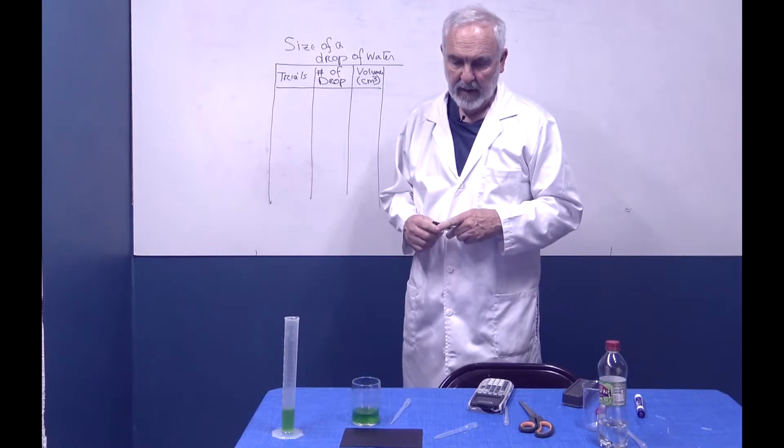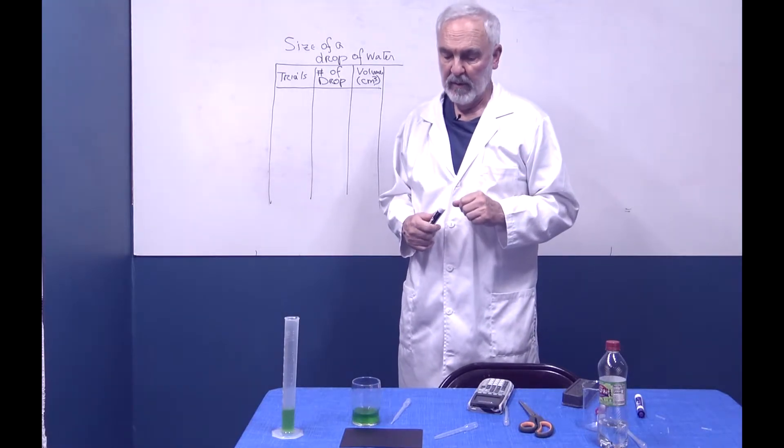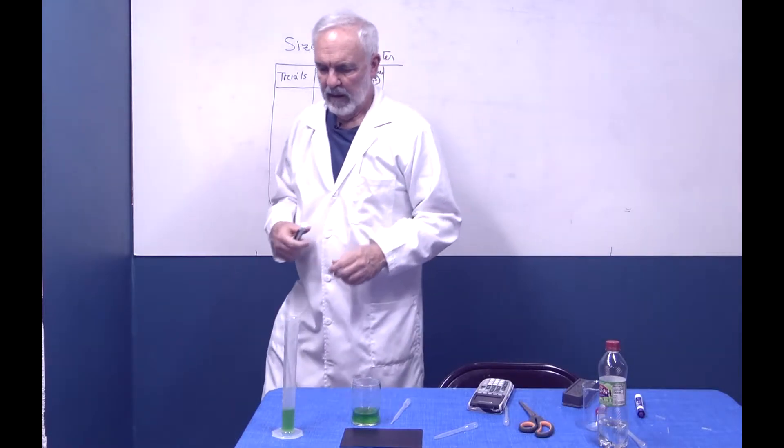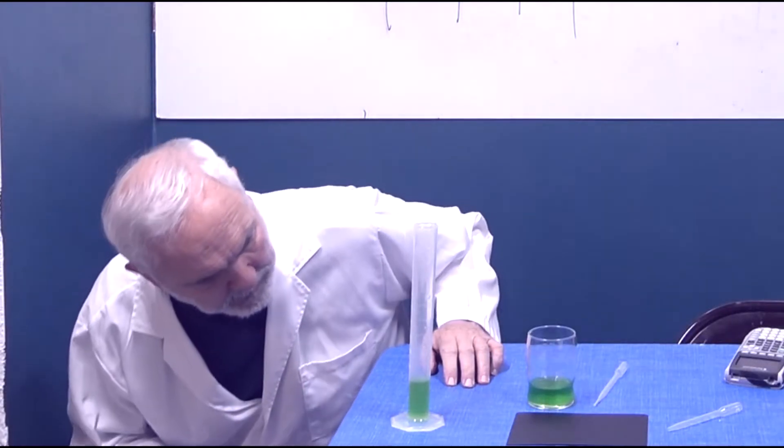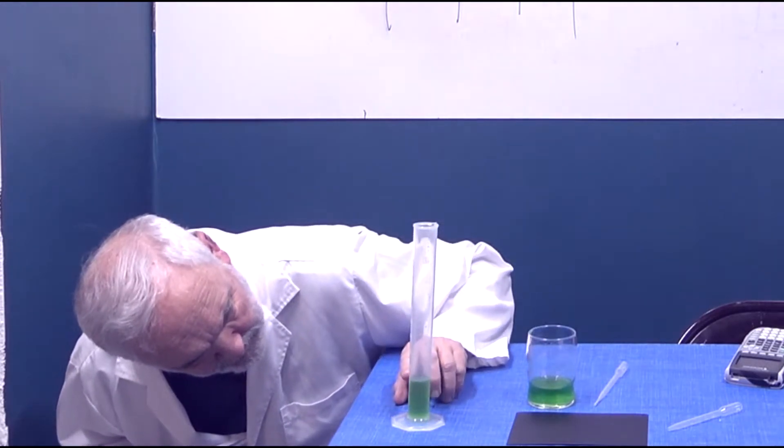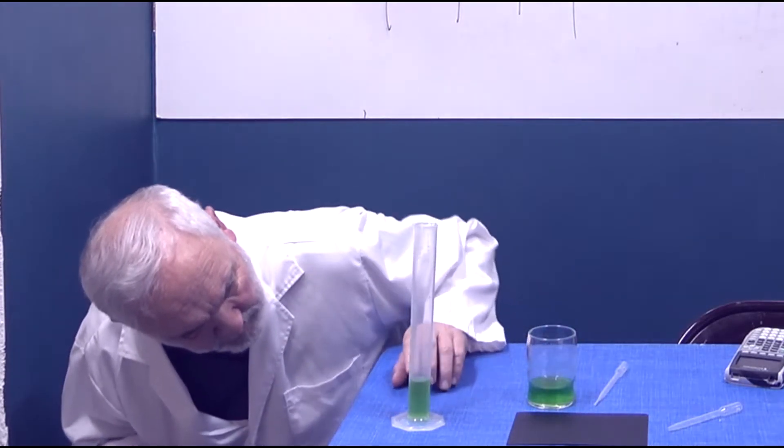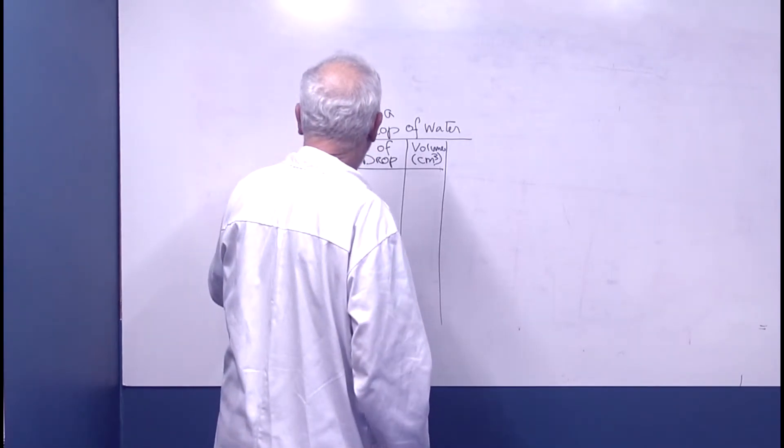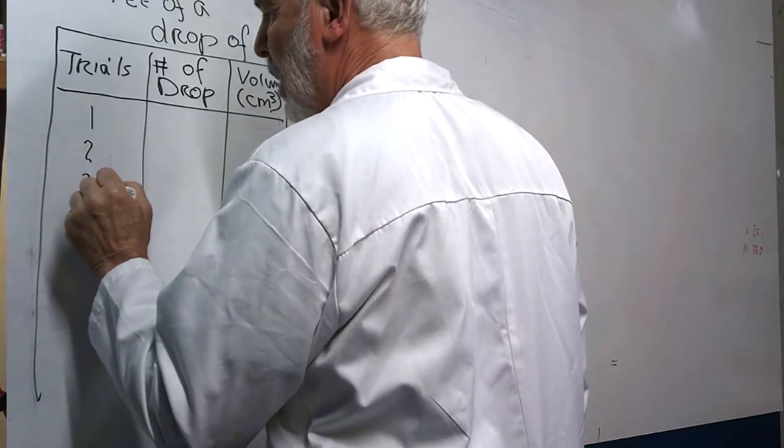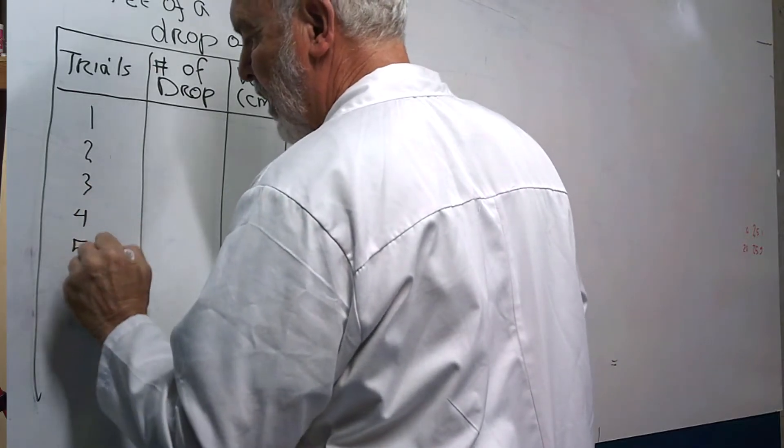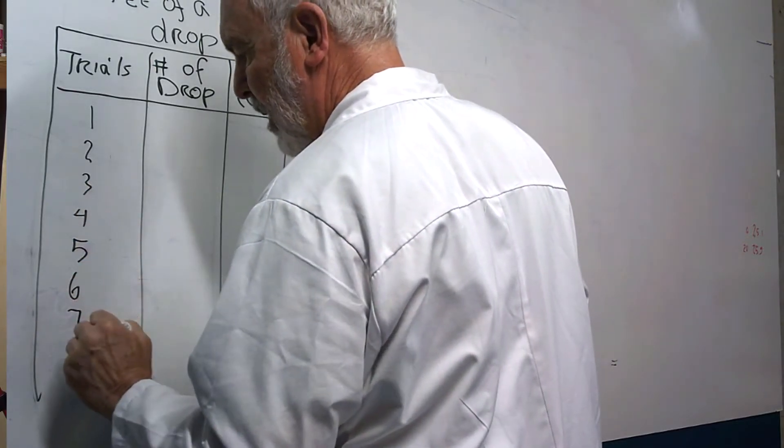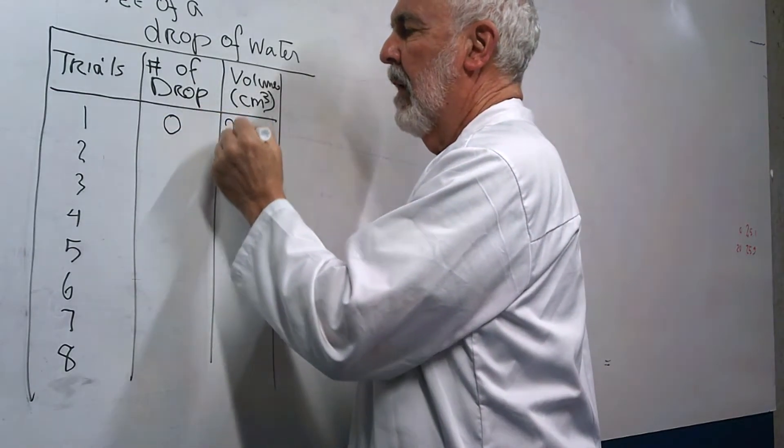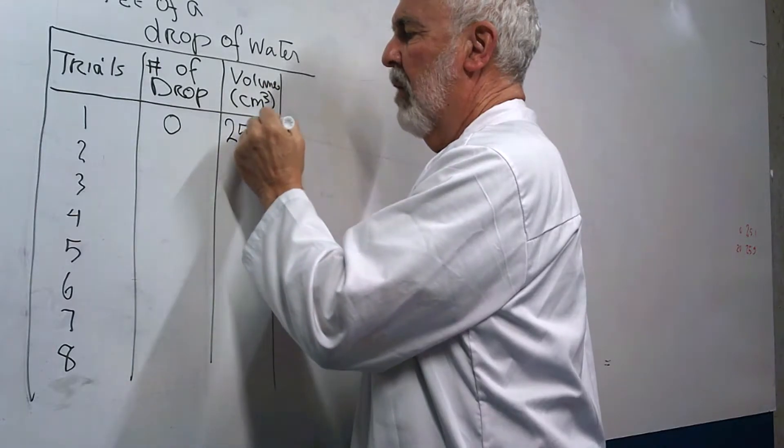Now that I have my lab coat on, I'm going to take my first measurement without adding any drops of water. Zero drops will read 25.1. Now the first one, I haven't added any drops and I have 25.1.